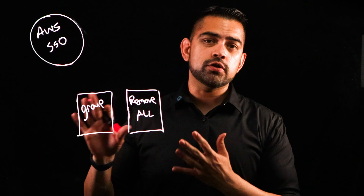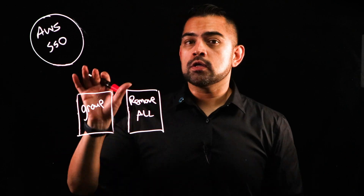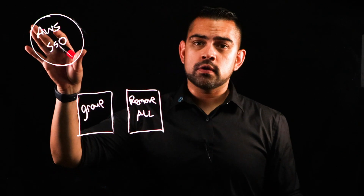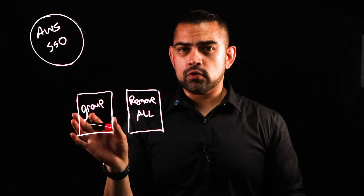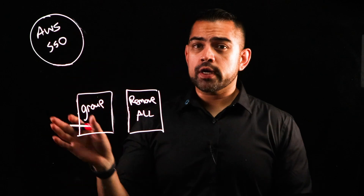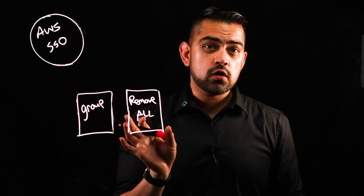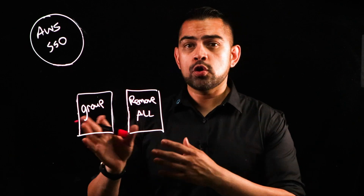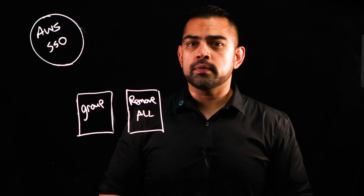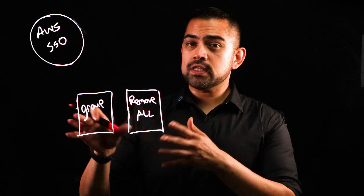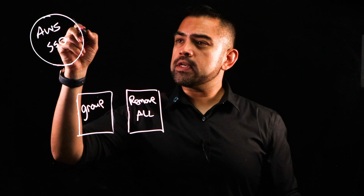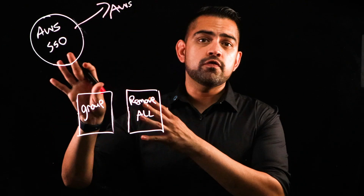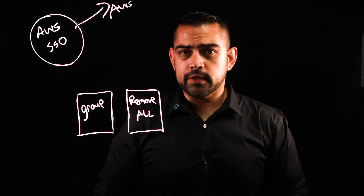Here's how you would use the connector in a workflow. We already have a connector configured in Okta Workflows. Starting with the group change, we'll kick off a workflow that'll use the Remove All card to remove all entitlements from a user who was removed from the group. Once this flow is actually run, a call is made out to AWS SSO to remove all those entitlements.